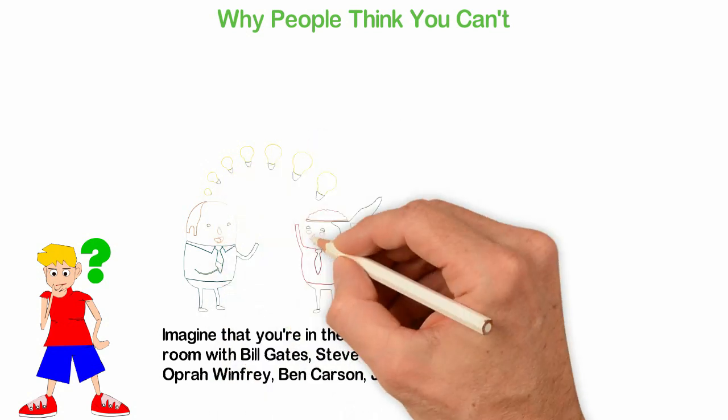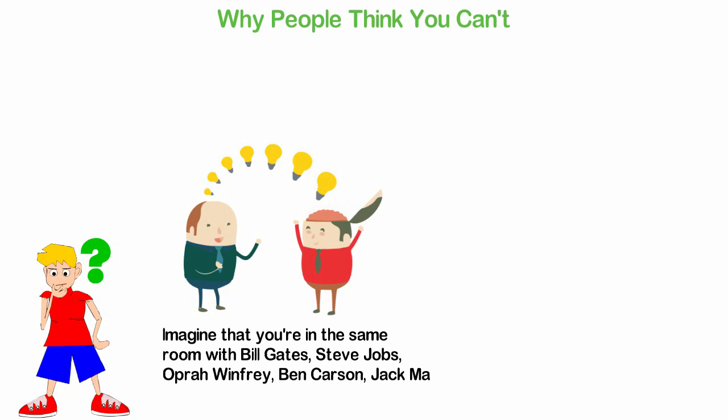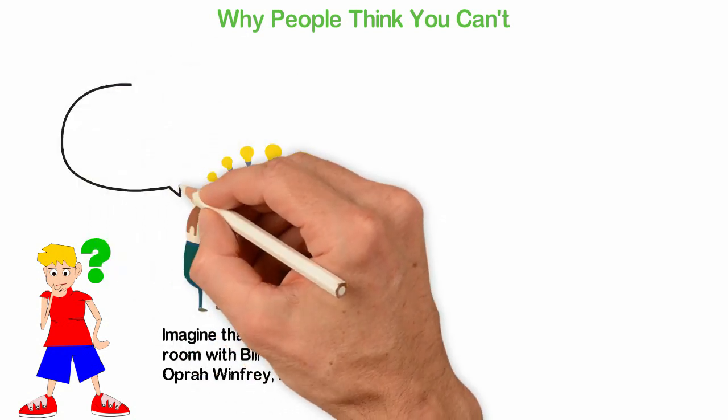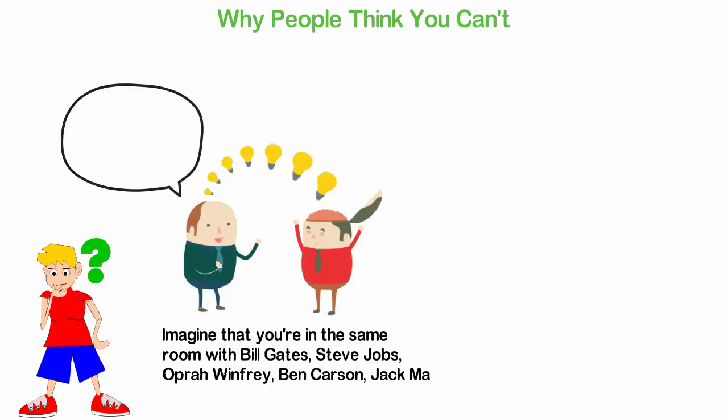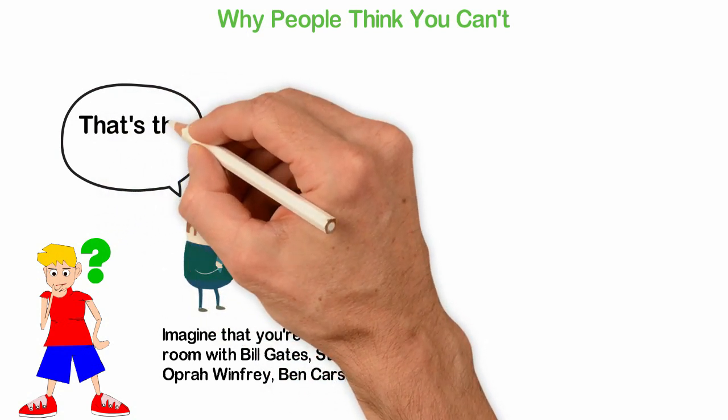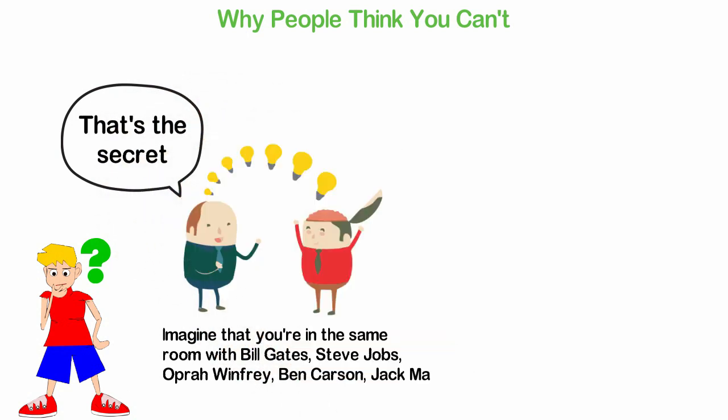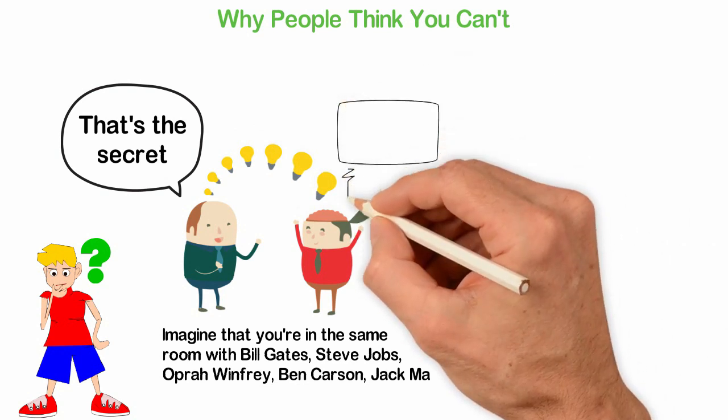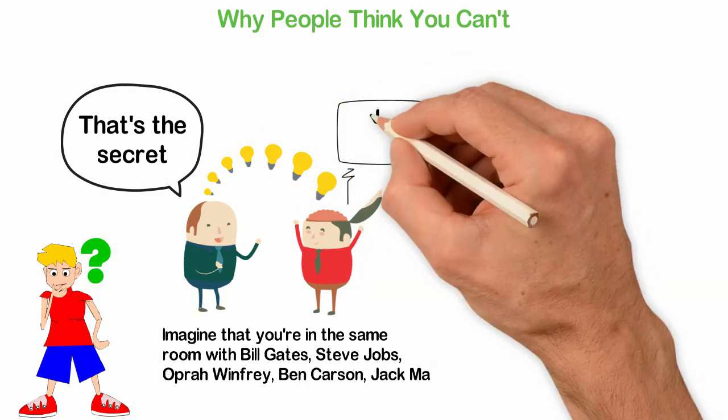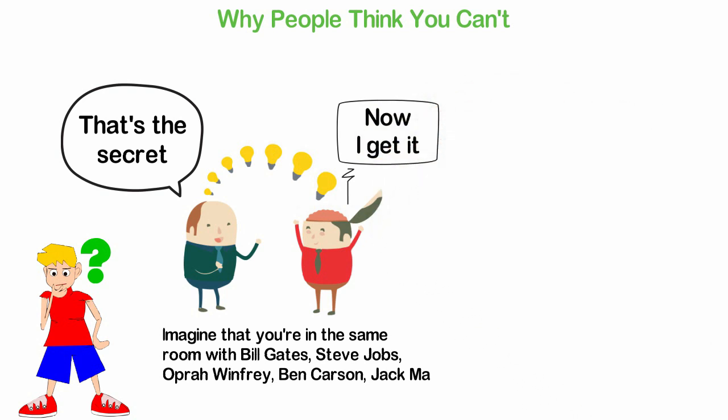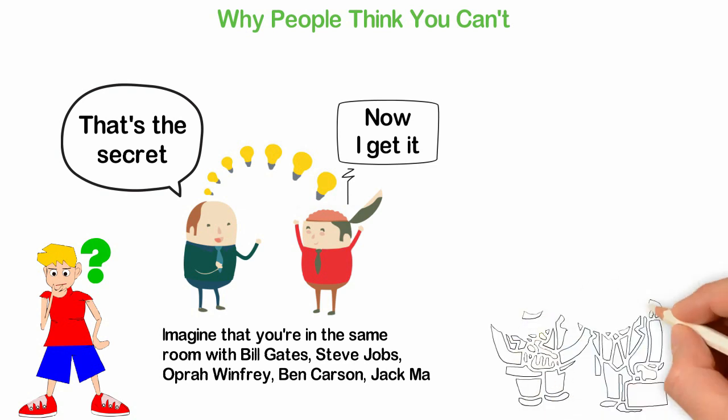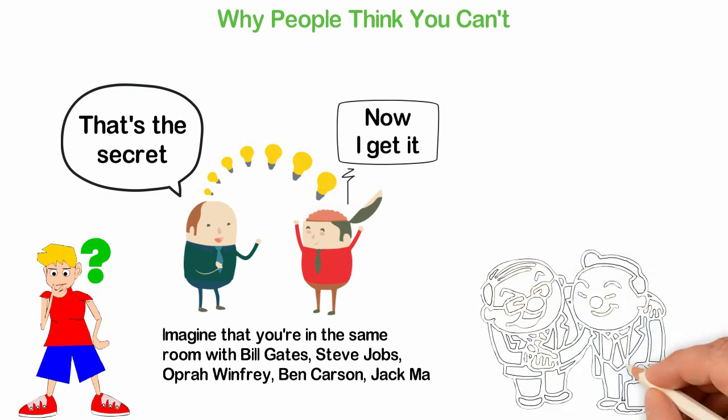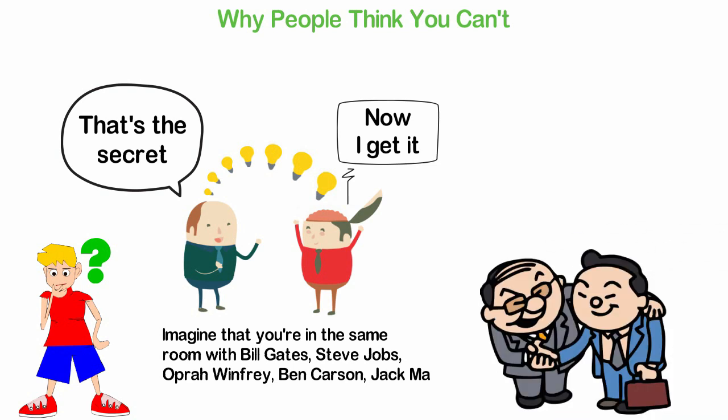Can Oprah Winfrey say to you that because you're a black woman, you can't achieve your dream? Can Jack Ma tell you that because you're short, you cannot build a successful company? Can Steve Jobs tell you that because you dropped out of school, you cannot be rich? You get the point. People who are capable of achieving success don't discourage other people who want to achieve success. I tell you this and it's the universal truth. Everyone who tells you that you cannot achieve something is simply telling you what he or she cannot achieve.